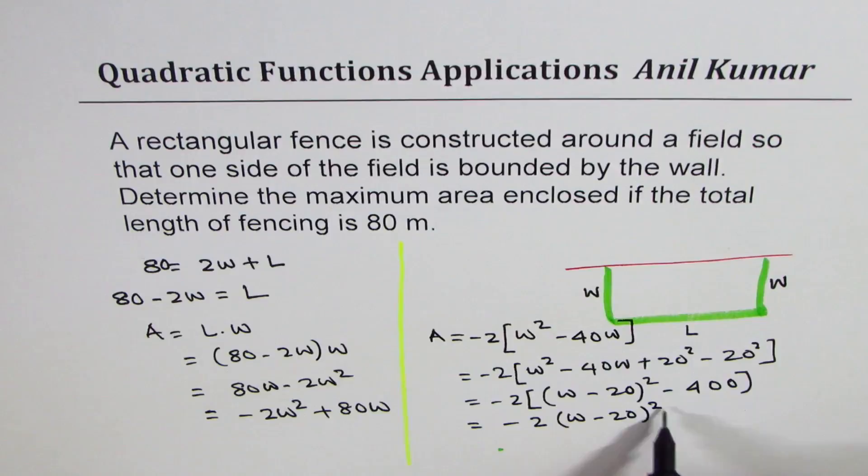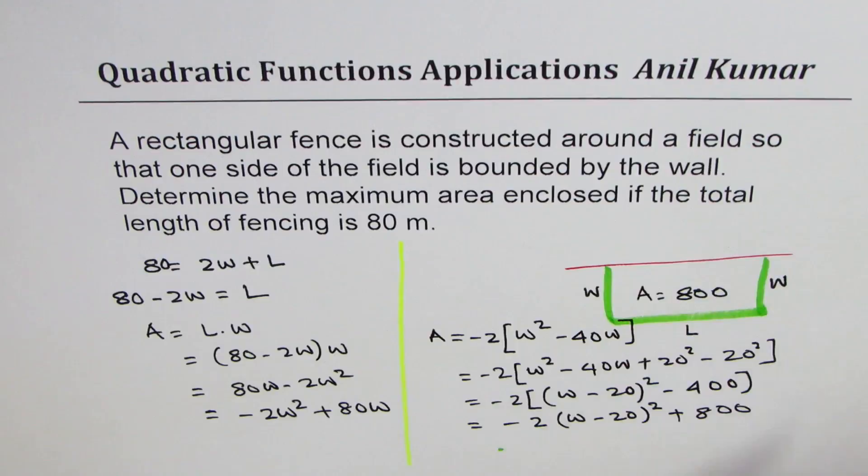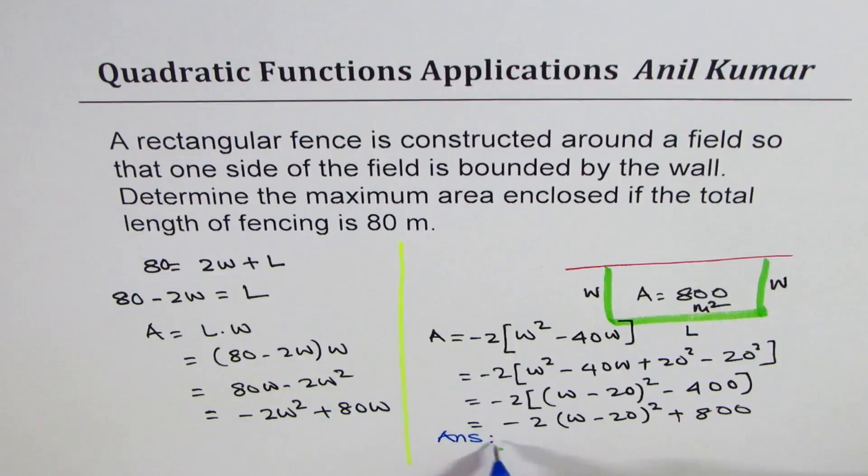Let's open the bracket now, so it gets minus 2(W minus 20)² - multiplying minus and minus gives you plus 2 times 400, which is 800. So the maximum area enclosed will be 800 meters squared.